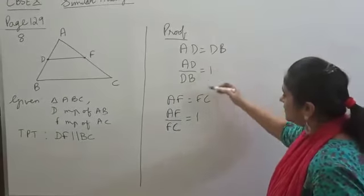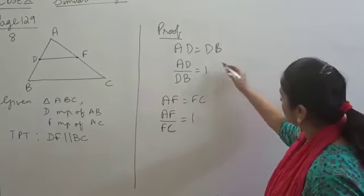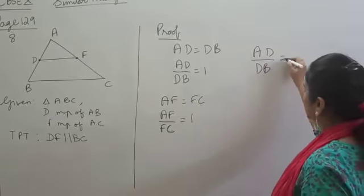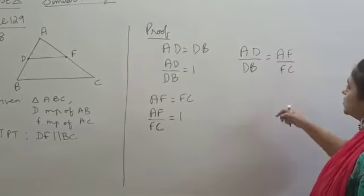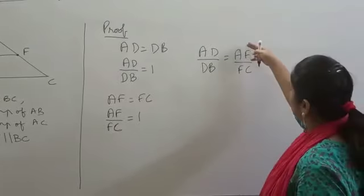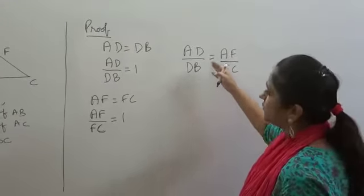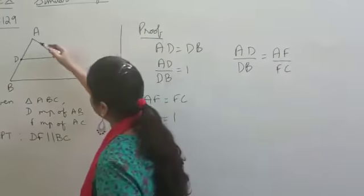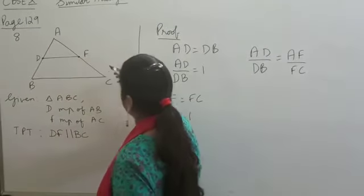So, now, see here AD by DB is 1. AF by FC is also 1. So, these two ratios are equal to 1. So, that means both are equal. AD by DB is equal to AF by FC. So, we have this proportion because this ratio is equal to 1, this ratio is equal to 1. So, both are equal.